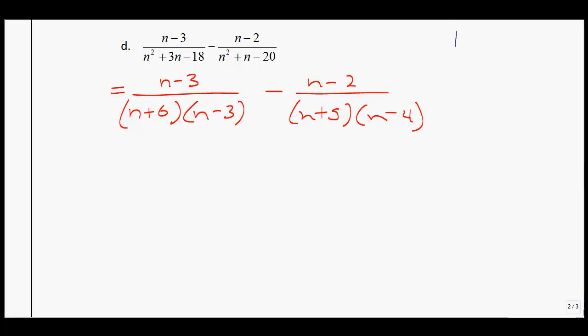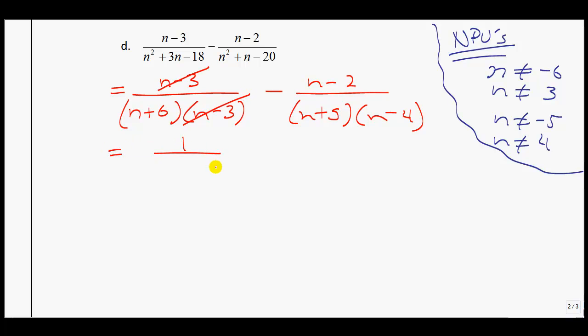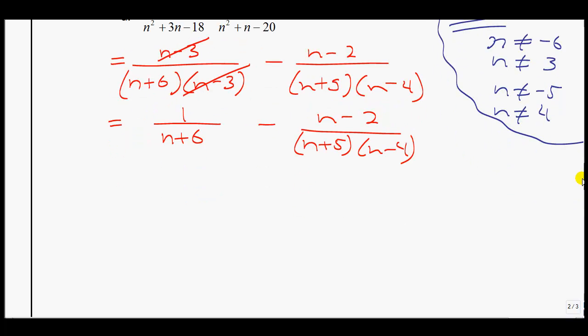From here, I would do my NPVs. Notice that on the left-hand side, we have n plus 6, that means n cannot equal negative 6. n cannot equal 3, n cannot equal negative 5, and n cannot equal 4. Hopefully you're noticing those just end up being the opposite of basically what you see in the brackets. Another unique situation is that in factored form, I notice that the n minus 3s can cancel. That will make things a lot more easy for you in terms of simplifying, because it's going to make your common denominator a lot smaller.